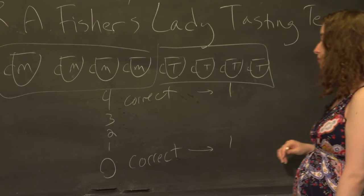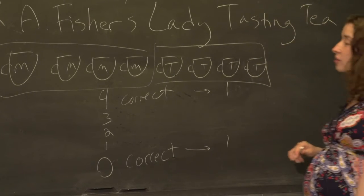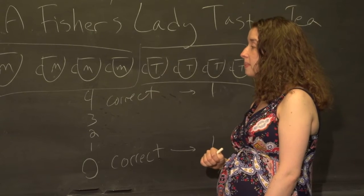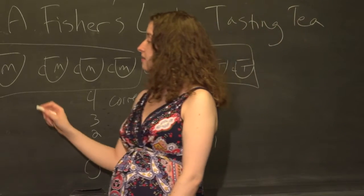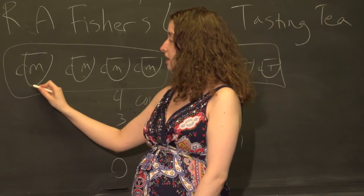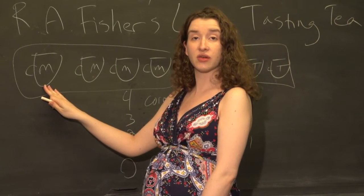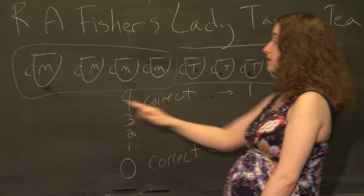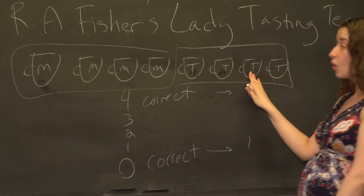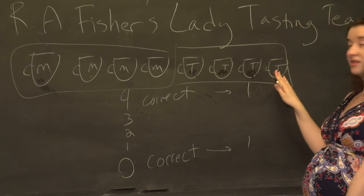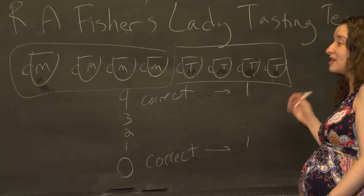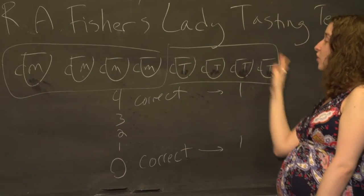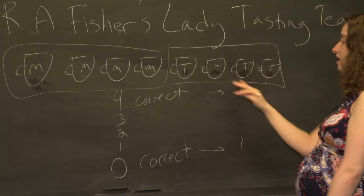Suppose we want to figure out how many possible sets of cups the lady could draw at random but have only one correct. One possibility is that she chooses this milk cup as the only one she gets correct, and then chooses maybe the first three tea-first cups. Or she could choose this milk and these three tea — that's one possibility.